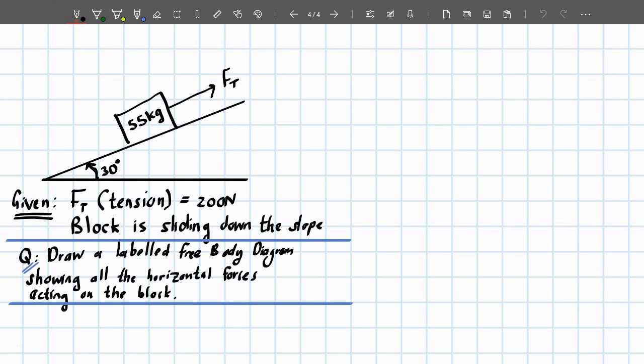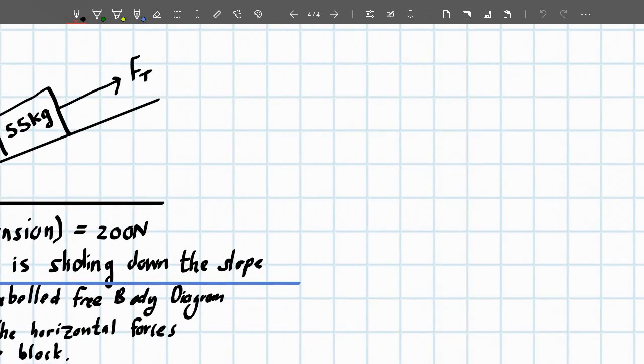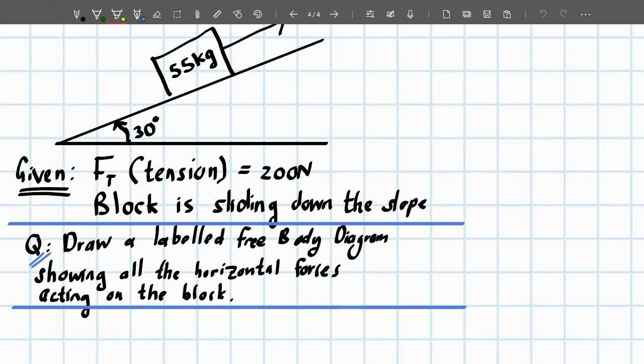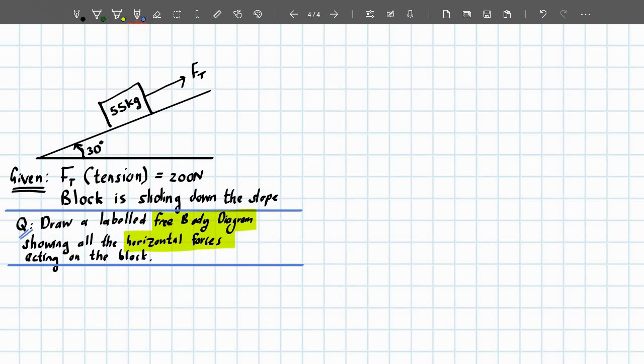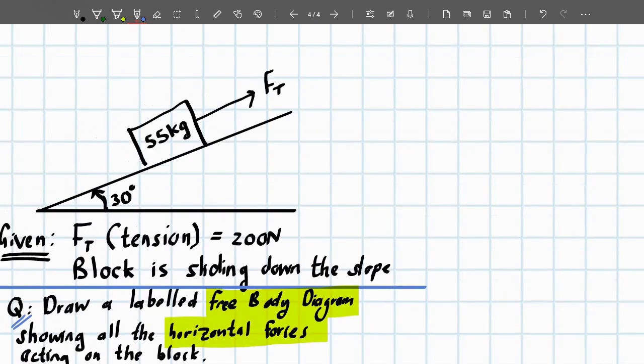We have a block on an inclined plane. It's given that the tension applied to the block is 200 N, but the block is still sliding down the slope. What we're required to do is draw a labeled free body diagram showing the horizontal forces acting on the block. They want you to draw a free body diagram showing the horizontal forces. So, we can do a rough sketch first, just to have an idea of all the forces acting on the object. And then, after that, we can draw the actual answer that we would have.